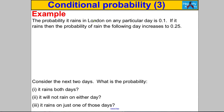The question says: the probability it rains in London on any particular day is 0.1. If it rains, the probability of rain the following day increases to 0.25 — so dependent on what happened the day before. Whatever happens the day before influences the probability of rain the next day, so this is definitely a conditional probability scenario. Consider the next two days: what is the probability it rains both days, it won't rain on either day, or it rains on just one of those days? This is a perfect scenario to draw a probability tree.